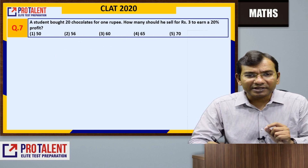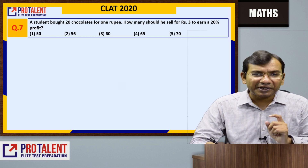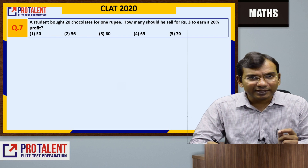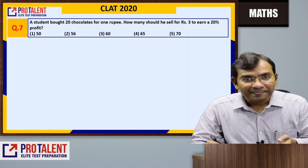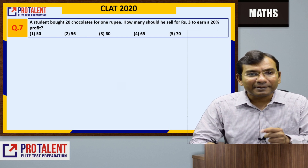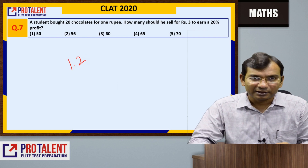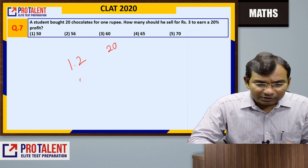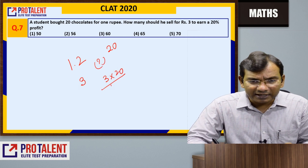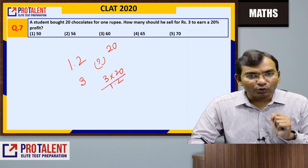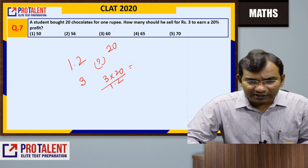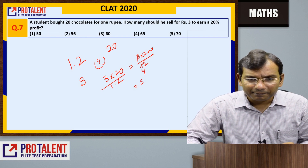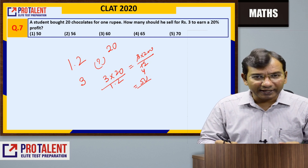Question 7: A student bought 20 chocolates for 1 rupee. How many should he sell for 3 rupees to make a 20% profit? He needs to receive 1.2 rupees per rupee of cost. So in 3 rupees he should sell: 3 × 20 / 1.2 = 3 × 200 / 12 = 50 chocolates. The answer is 50 chocolates.